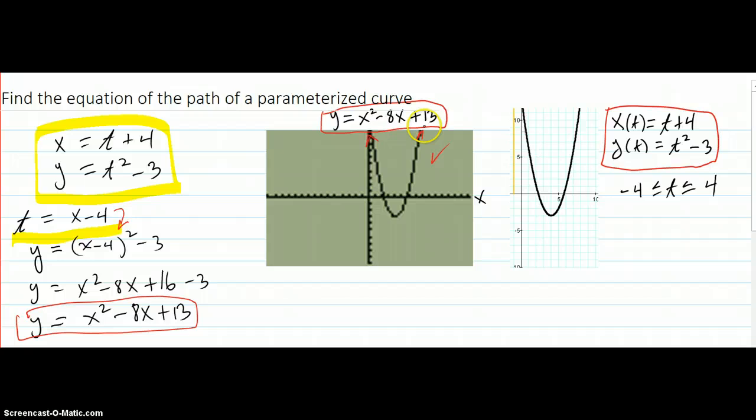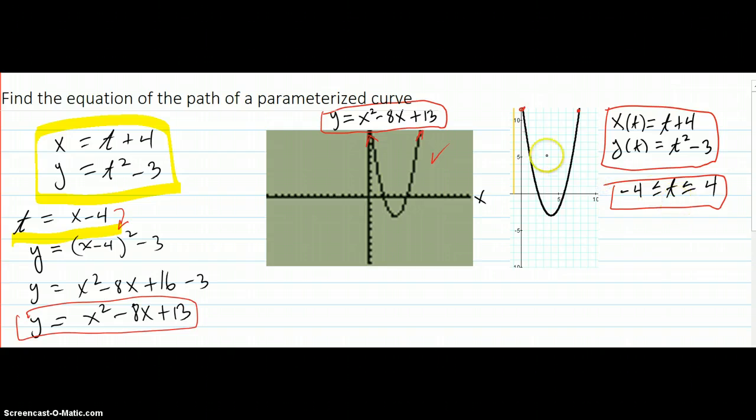But let's say you wanted it to end right there. You can make it end here and here or wherever you want by restricting the domain of the t values. So these particular t values would make it look like this.